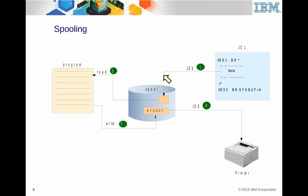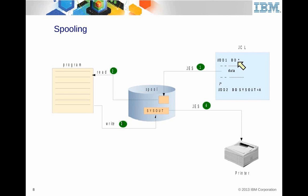This diagram shows the spool. Remember the DD asterisk followed by in-stream data? That can actually be stored on the spool because it becomes part of the input stream, and the program can read it. So there's data that can be stored in the spool if it's in-stream, though that's somewhat rare. The program can read it, and as shown here, it's writing to SYSOUT. JES can then put it on a printer. The whole idea of the spool is for storing the input — even things like DD asterisk where data follows.